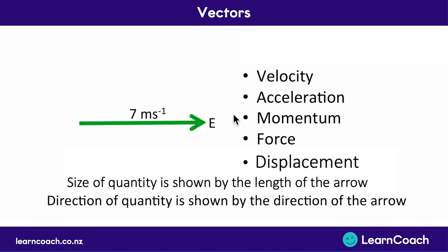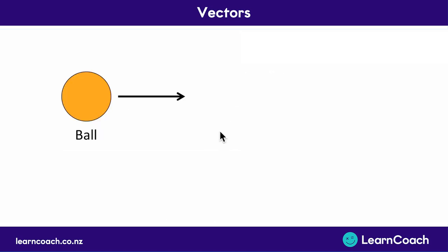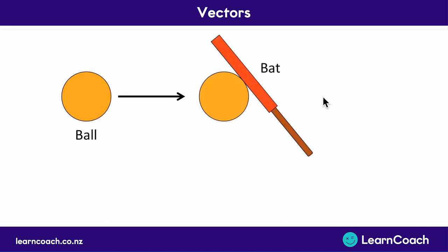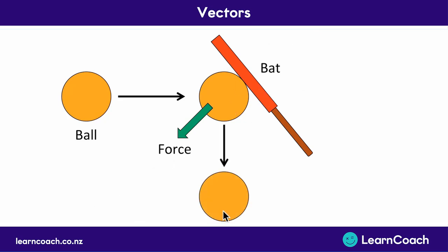Now we're going to look at a couple of applications of vectors in this video, most of which are applicable to what you're doing in your tests. Here we have a ball traveling to the right — say this is a ping-pong ball. It travels to the right and gets hit by a ping-pong ball bat. The bat has a force coming down in the bottom-left direction, and then the ball gets pushed downwards. The ball had an initial velocity going straight to the right, then the velocity changed when the bat hit it, and then we had a final velocity coming downwards.